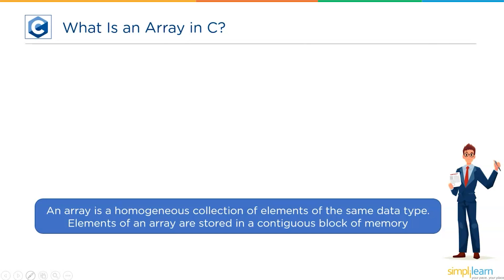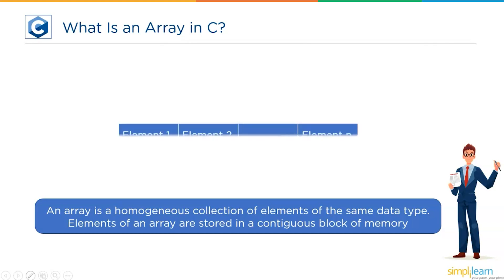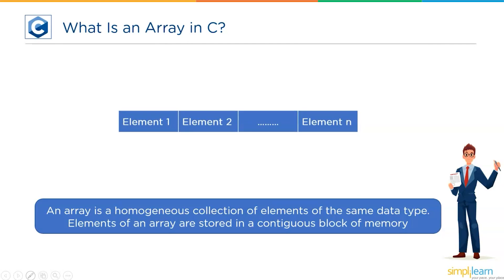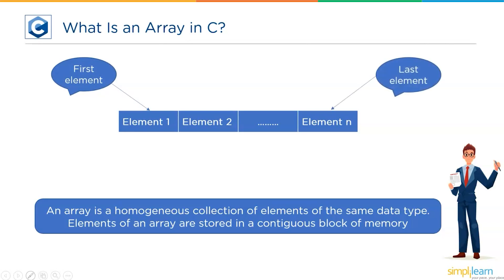Let's look at the diagram to see how array elements are stored one after the other. Consider n elements to be stored in an array — all elements are stored consecutively, where element 1 is the first and the nth element is the last. In memory, whenever consecutive free space is available, memory is allocated as per the mentioned array size.